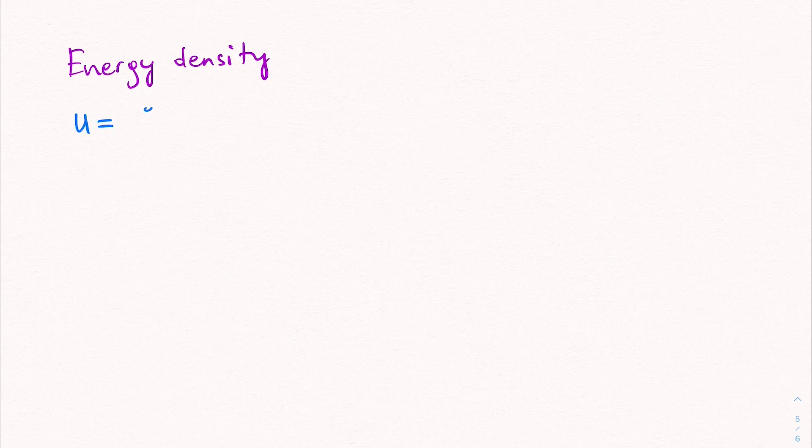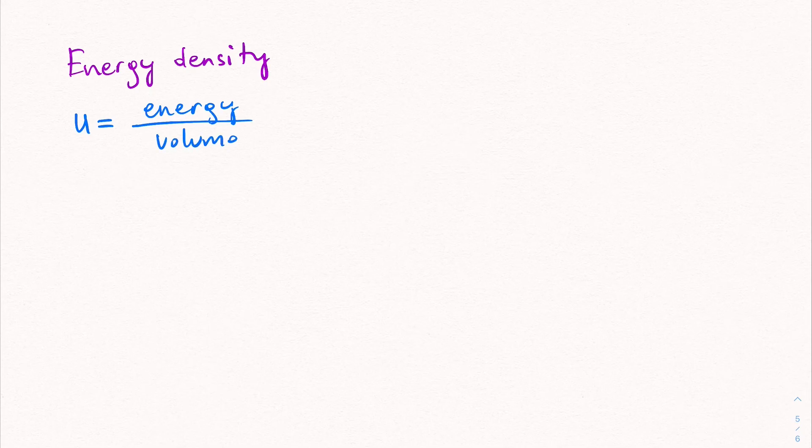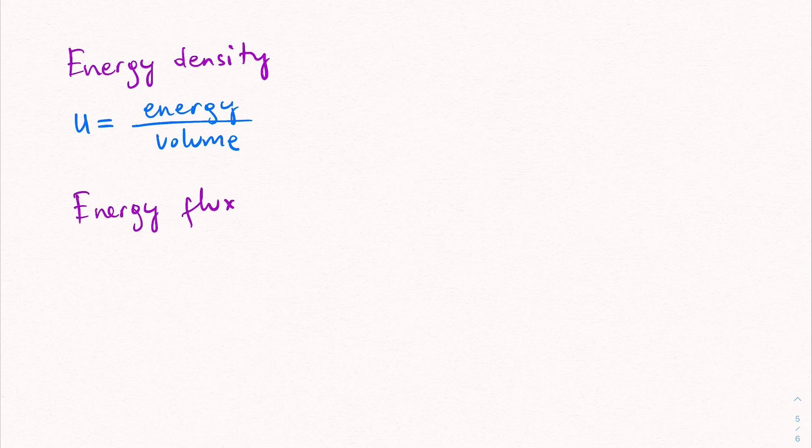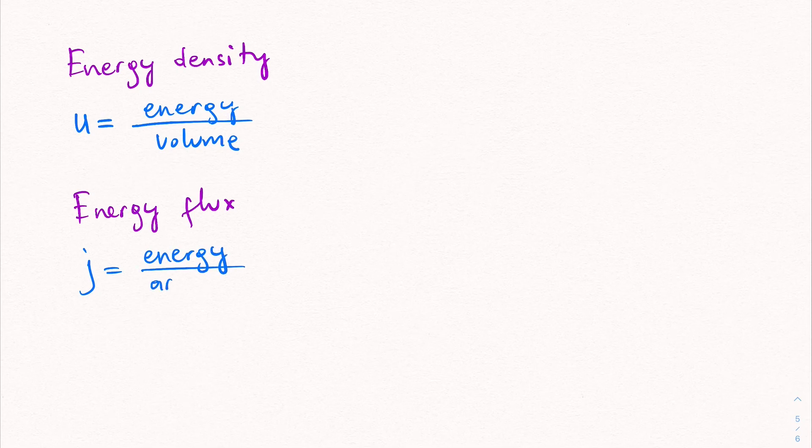I want to talk about the relationship between the energy density and the energy flux. So let's write energy density. This is denoted by u which is energy divided by volume. So let's also define energy flux and this is going to be j equals to energy per unit area per unit time.